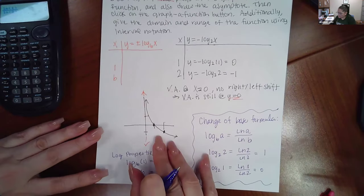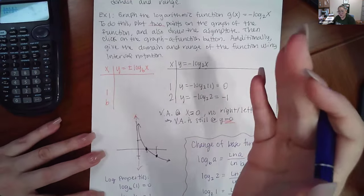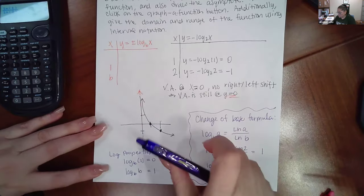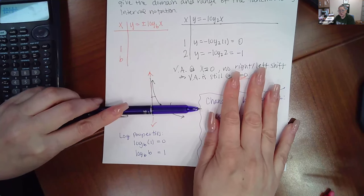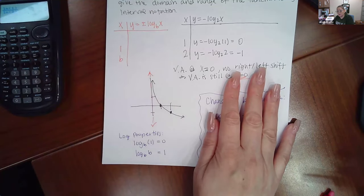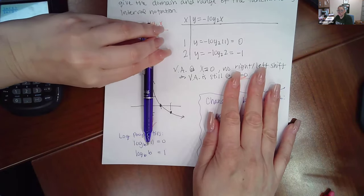Once I have those two values, for exponentials, the horizontal asymptote is automatically at y equals zero. For logarithms, it's a vertical asymptote, and it's at x equals zero.